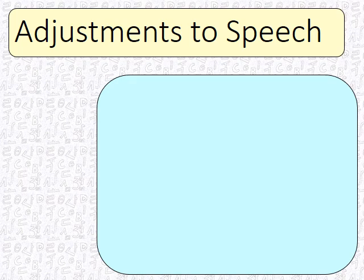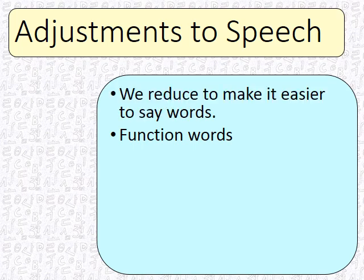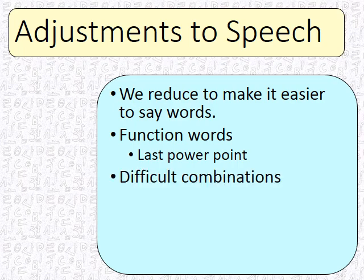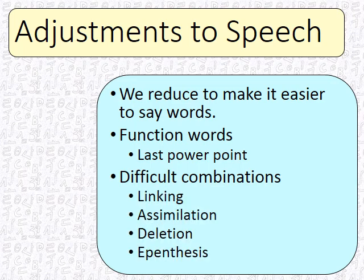Adjustments to speech — basically, we reduce things to make it easier to say. This includes function words, like we had in the last PowerPoint. But there are also other things that we do to make it easier to say words. There are also some difficult combinations, which is what this PowerPoint is about: linking, assimilation, deletion, and epenthesis.